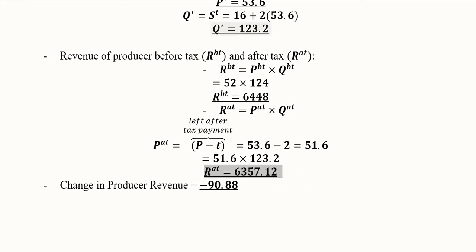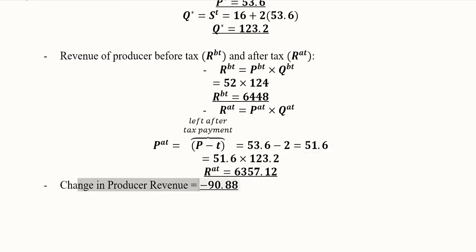We can clearly see that revenue before tax was greater than revenue after tax, which is logical: the tax on the producer discourages production as the price is reduced by the amount of the tax. In the next step, the burden of the tax can be shifted to the consumer, but right now we are discussing only the first step. The change in producer revenue is negative, meaning there is a decline in the producer's revenue.